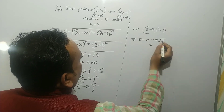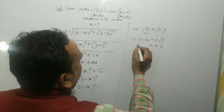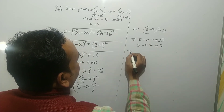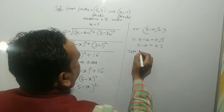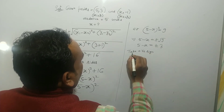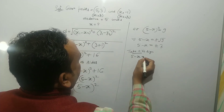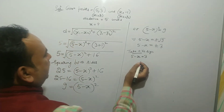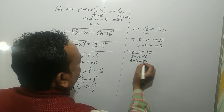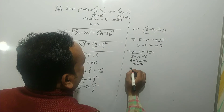Taking the square root of both sides: √9 = 3, so we get 5 − x = ±3. Taking the positive sign: 5 − x = 3. By transposition, 5 − 3 = x, so x = 2.